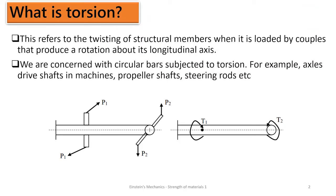Hello, welcome to Einstein's Mechanics. In today's episode, we are going to talk about torsion. What do we mean by saying torsion? Torsion refers to the twist of structural members when it is loaded by couples. Pay attention to these couples that produce a rotation about the longitudinal axis. So what we are going to learn in this episode is all about twisting or torsion.